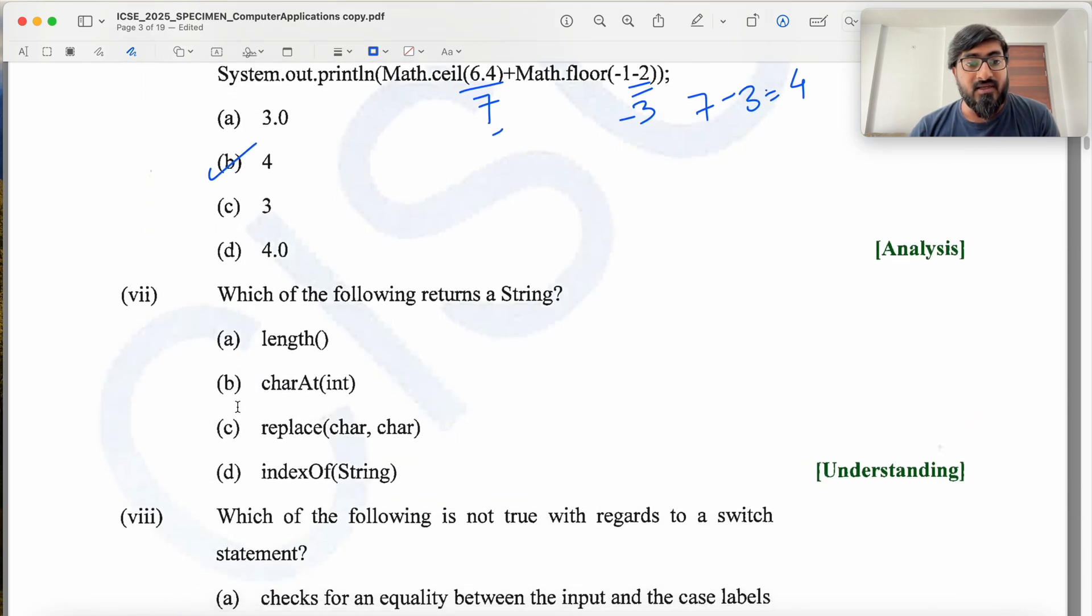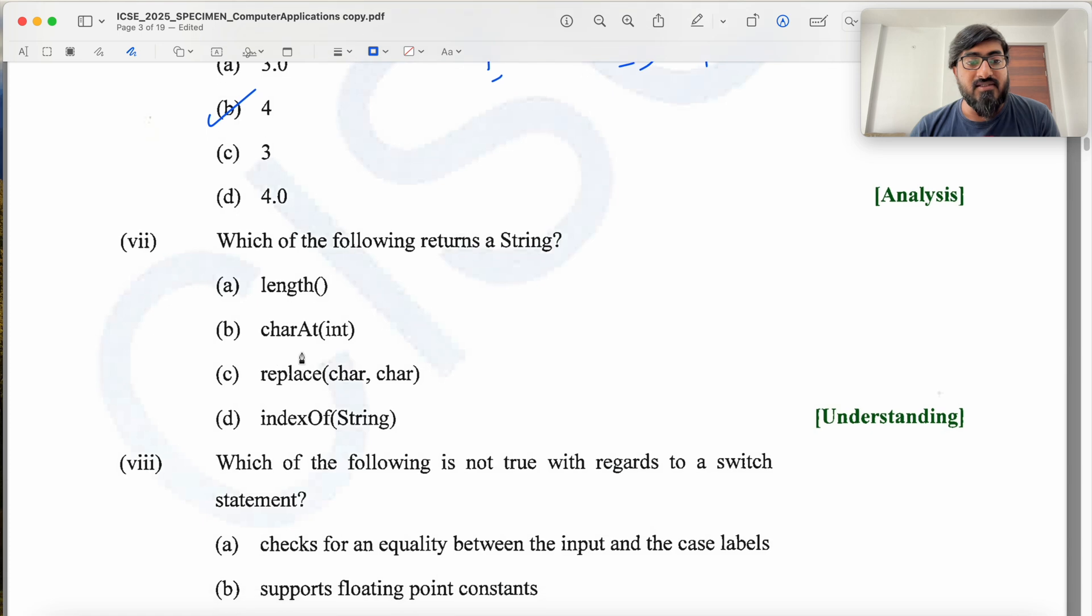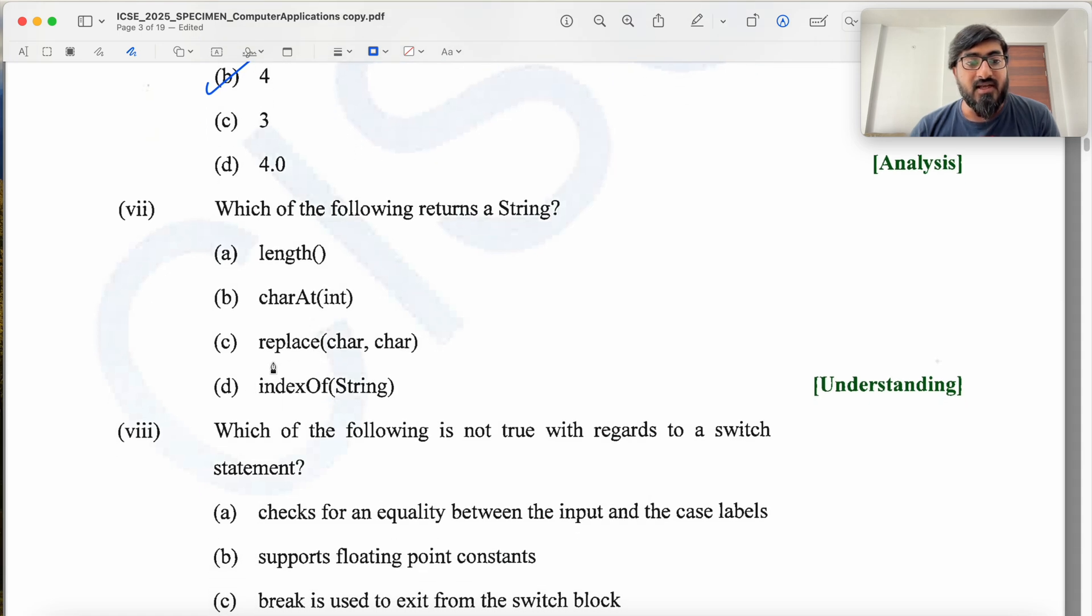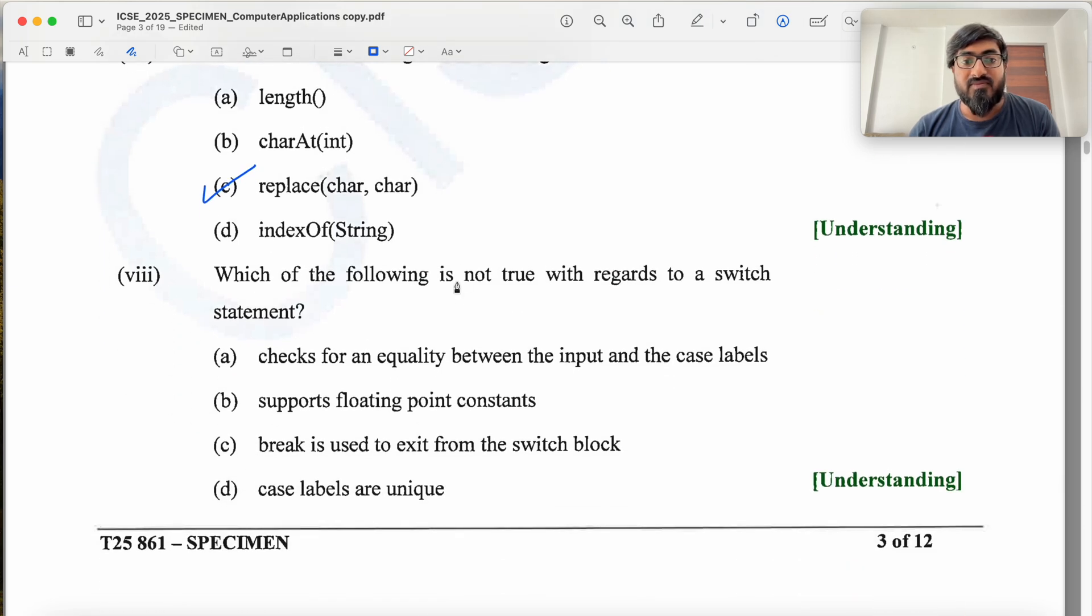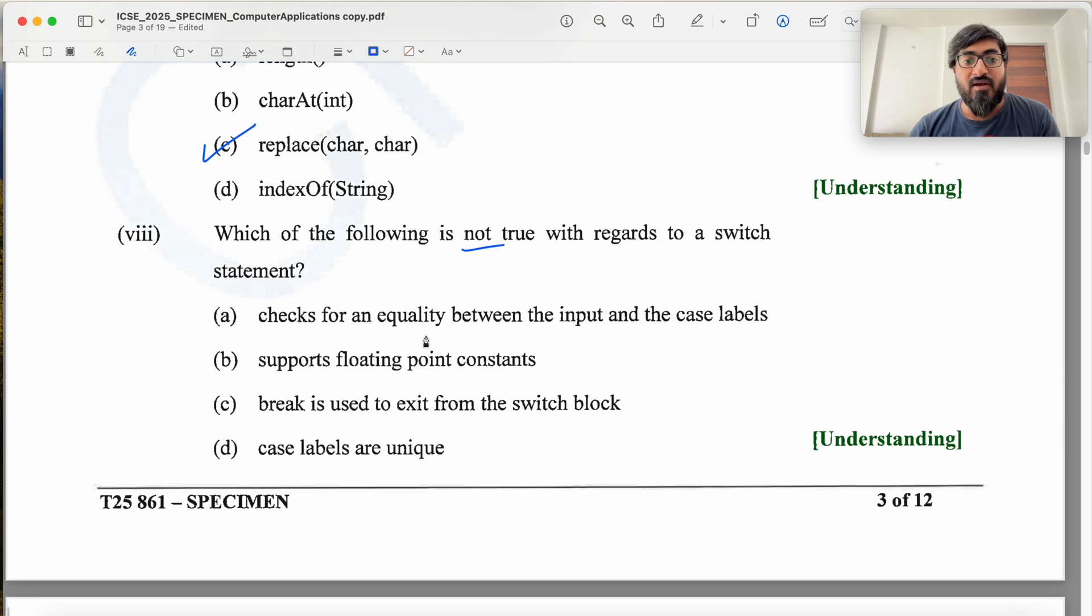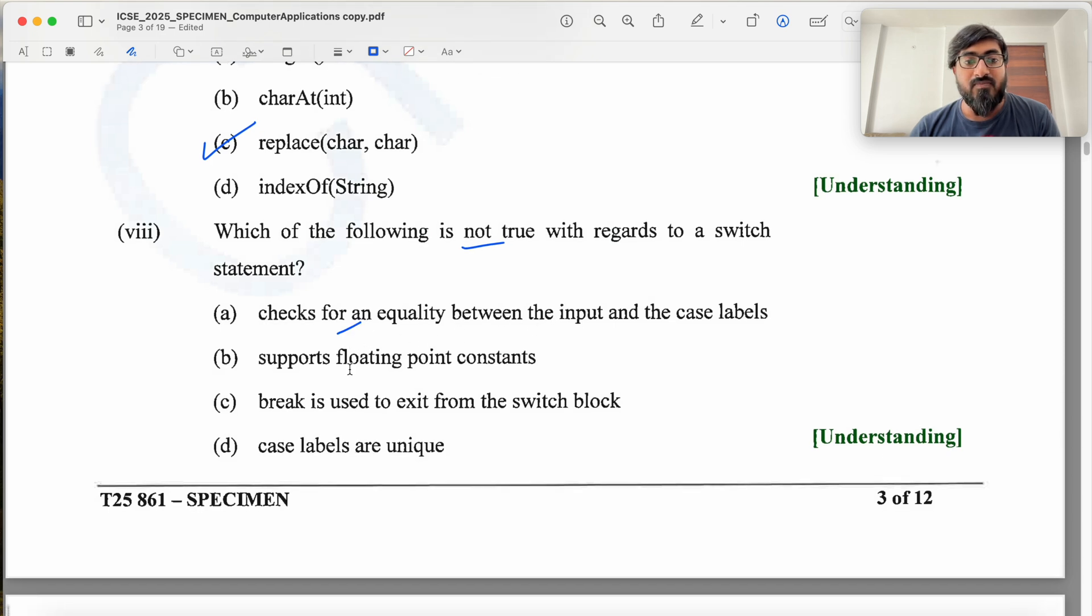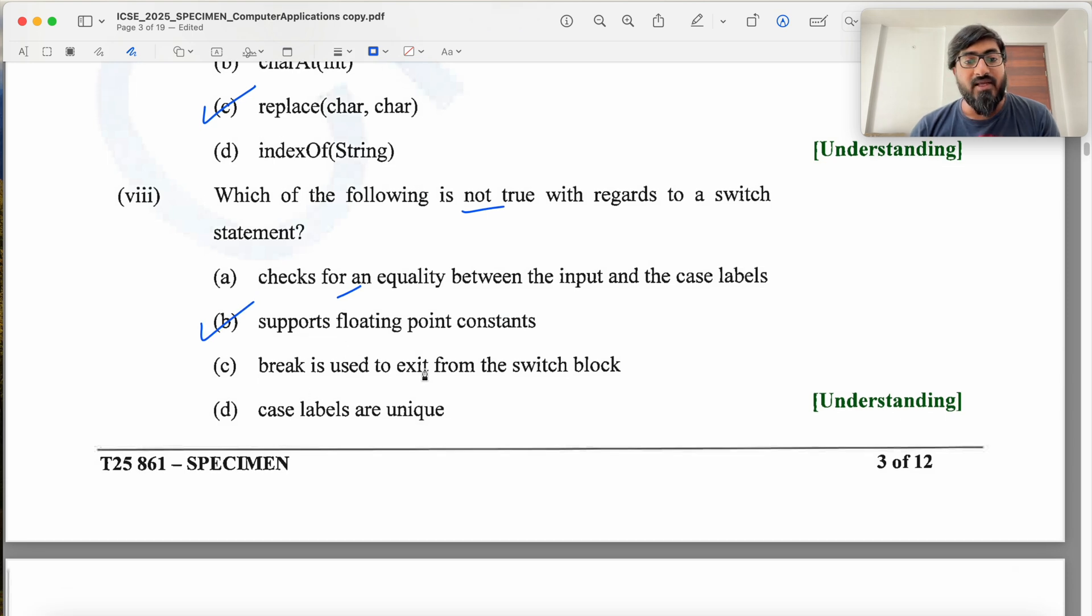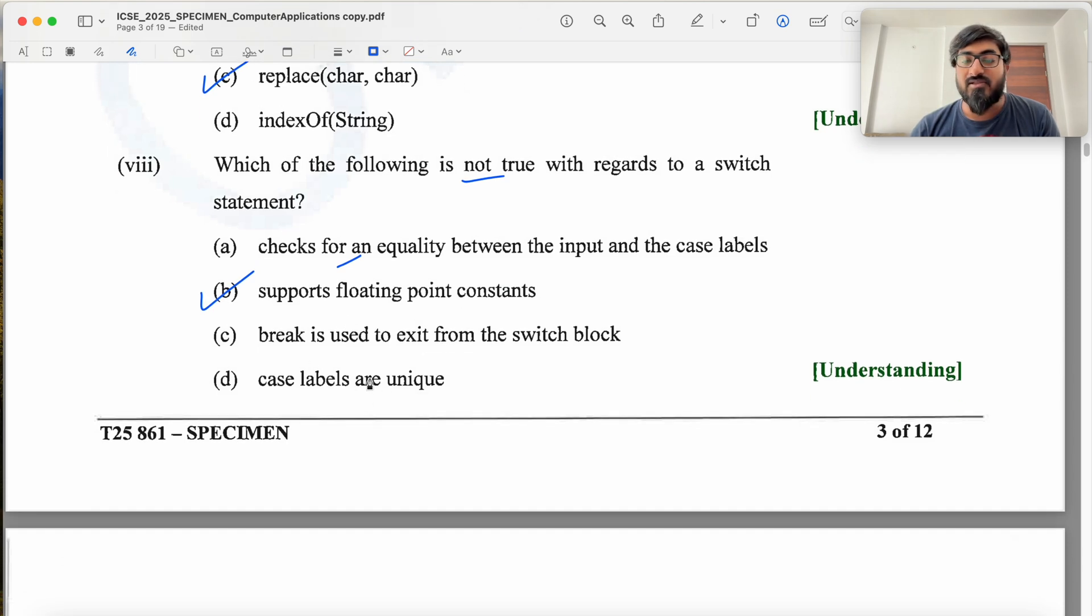Which of the following returns a String? dot length returns an integer, charAt returns a character, indexOf returns an index, and substring returns a string. Which of the following statement is not true regarding switch statement? Case values accept constants is not true. So this is the answer.